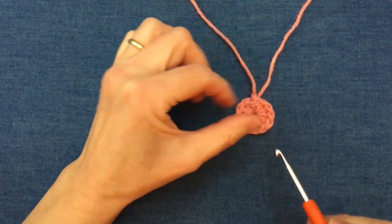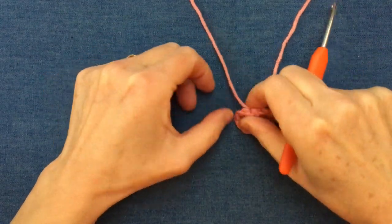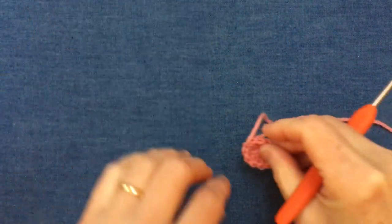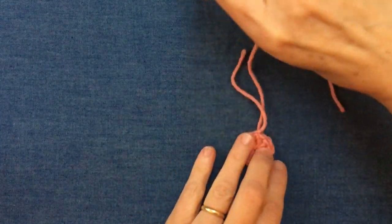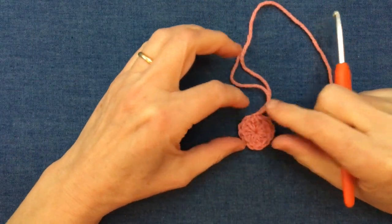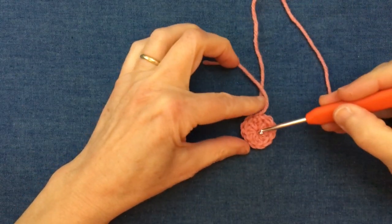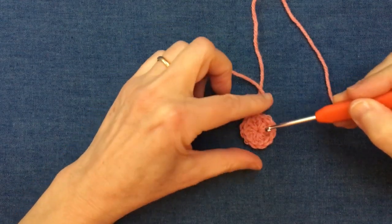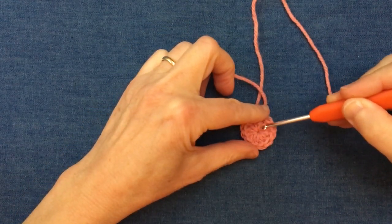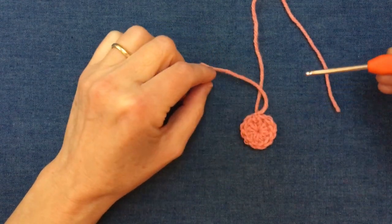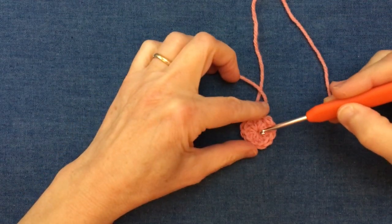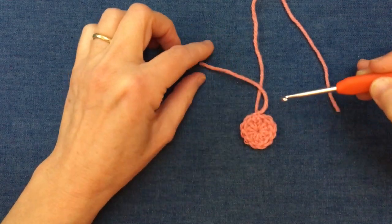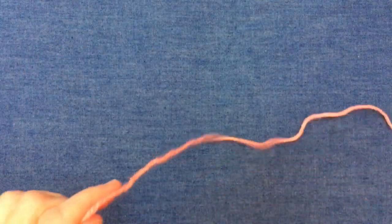But there is another way to do the beginning, and that's using a method called the magic ring technique. You can see in this one which I've used the magic ring, how the center hole is very tight. With this technique you can vary how open you want that hole to be. For some projects like a hat where you want it to be very tight and closed, this is the perfect way to begin.